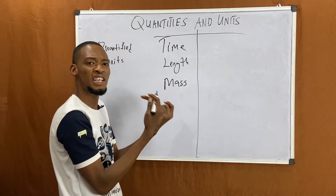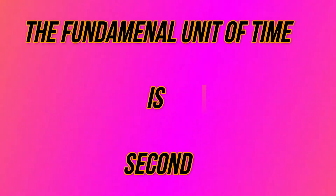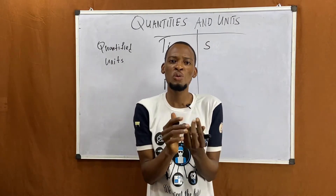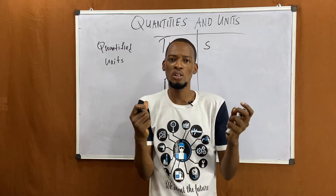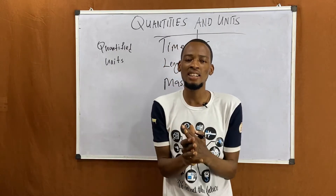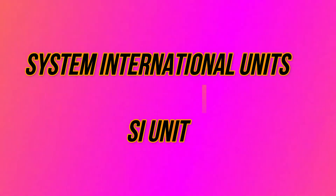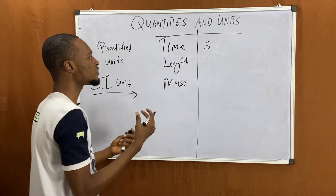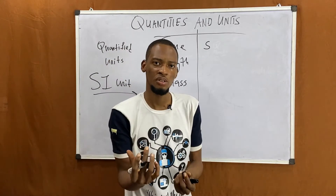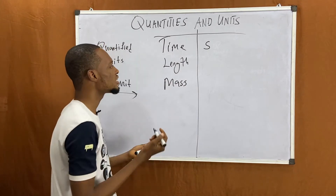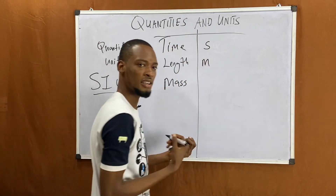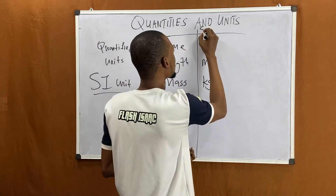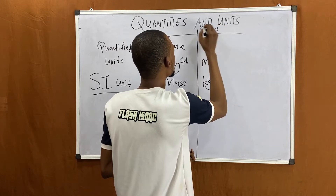The unit of time is seconds. A group of scientists gathered together to form particular units suitable for everybody all over the world to use, and they formed the Système International unit, which is the SI unit. The SI unit of time is seconds, the SI unit of length is meter (m), and the SI unit of mass is kilogram (kg).